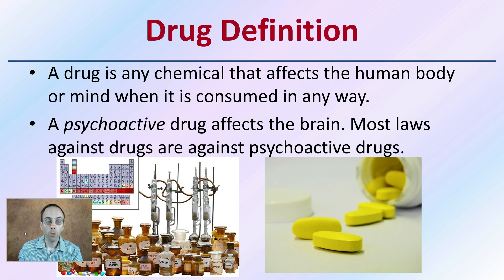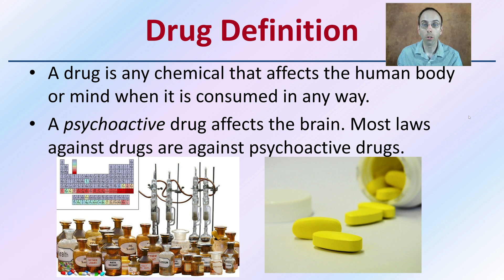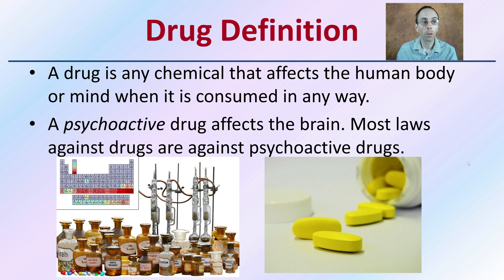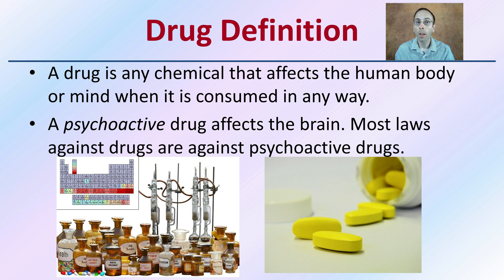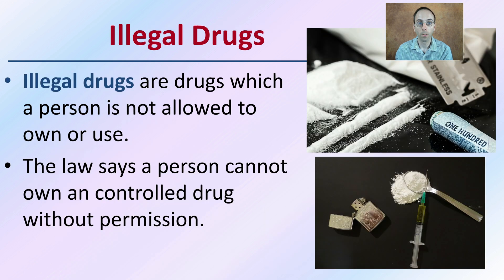First we need to define what a drug is — and this is a drug in general, illegal or not. A drug by definition is any chemical that affects the human body or mind when it's consumed in any way. A psychoactive drug affects the brain, and most of the laws are against psychoactive drugs because of the alteration to mood and behavior, or simply put, brain function.